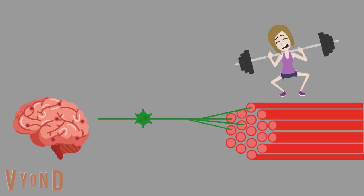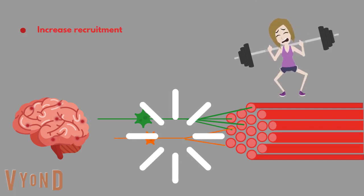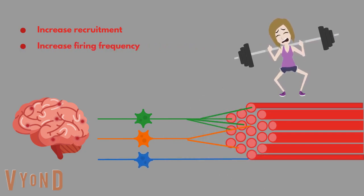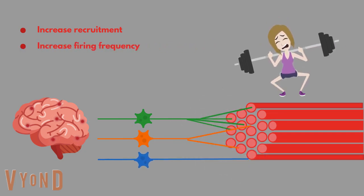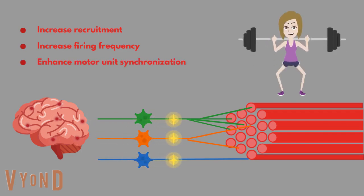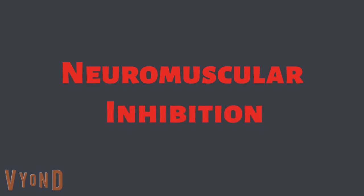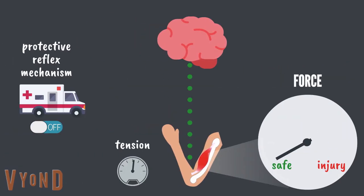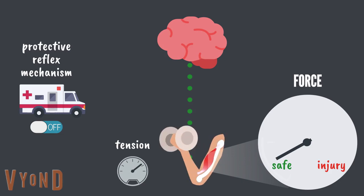When we lift heavier loads, our brain will increase our neural drive by recruiting more motor units, increasing the rate at which those recruited motor units activate muscle fibers, and lastly synchronizing the motor units so that they contract at the same time.